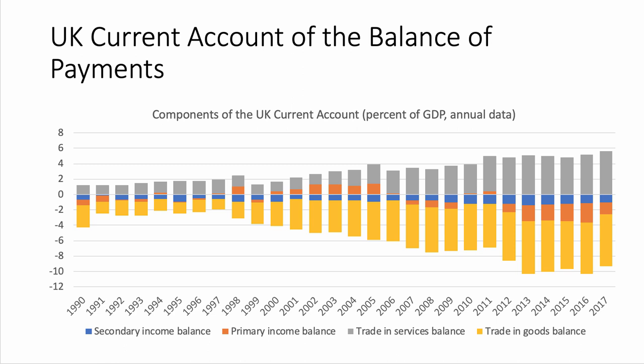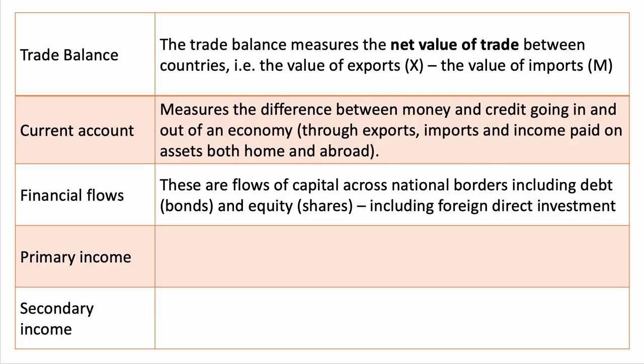So the current account for the UK is made up of trade in goods, trade in services, primary income, and secondary income. Financial flows are important in the wider picture of the balance of payments. They are flows of capital that move across national borders, including debts such as corporate and government bonds, and the buying and selling of equity and shares, including foreign direct investment (FDI).